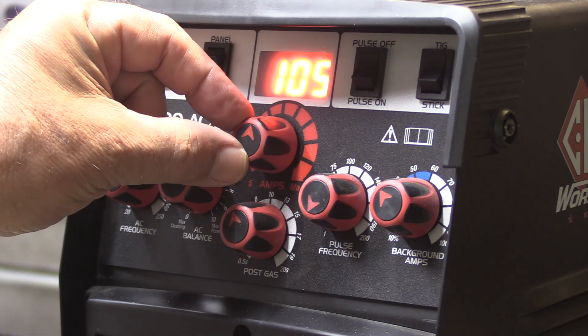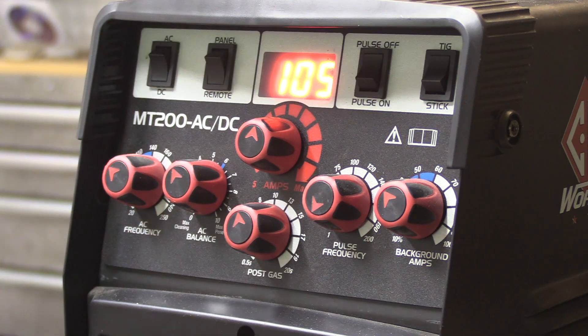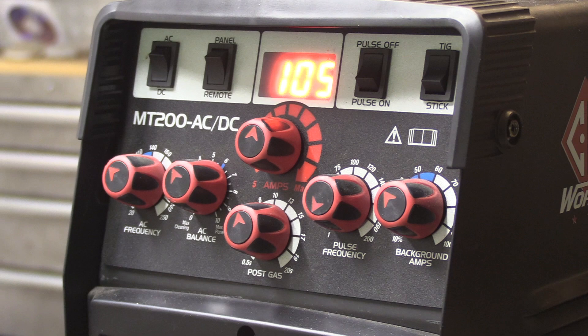Then when you start adding filler metal, and I'm using a 1/16 ER70S6 today, you just need about 10% more amps. The reason I only use 95 amps is because if you don't hold a good tight arc without filler metal at 95 amps, the puddle won't even move with you. So now I increased it to 105, we're ready to weld with filler metal.